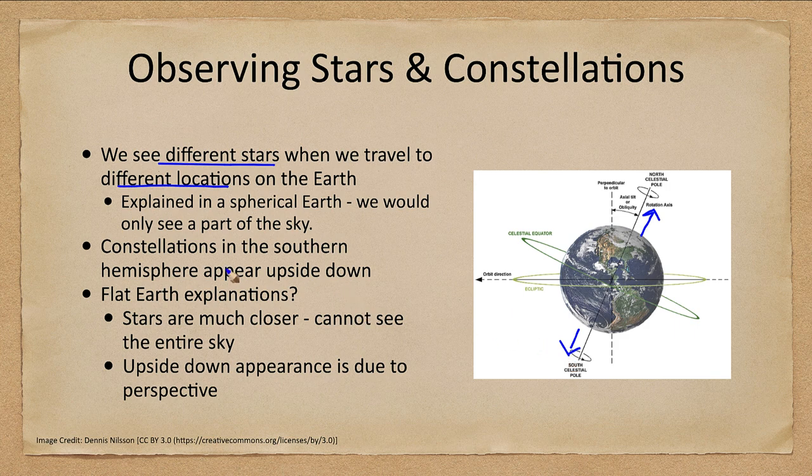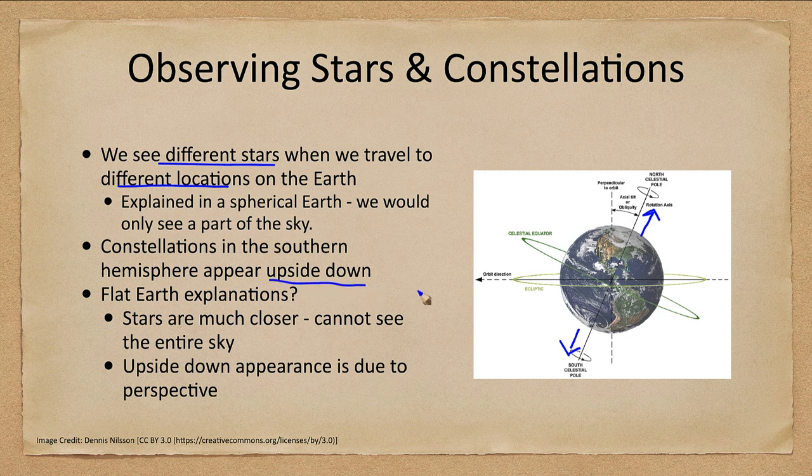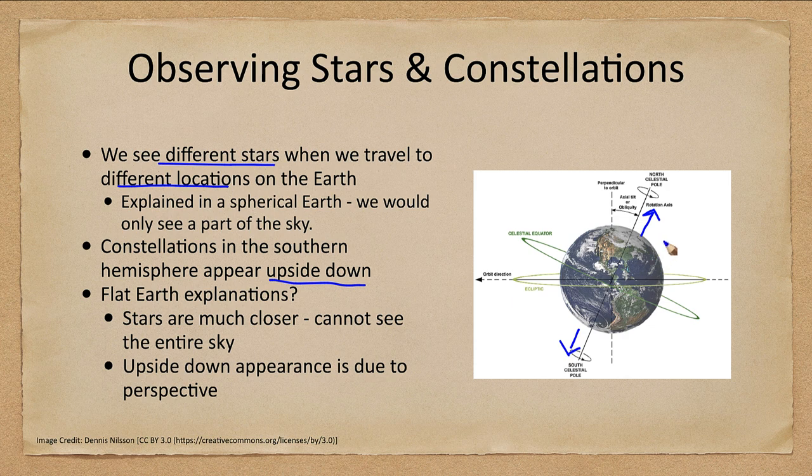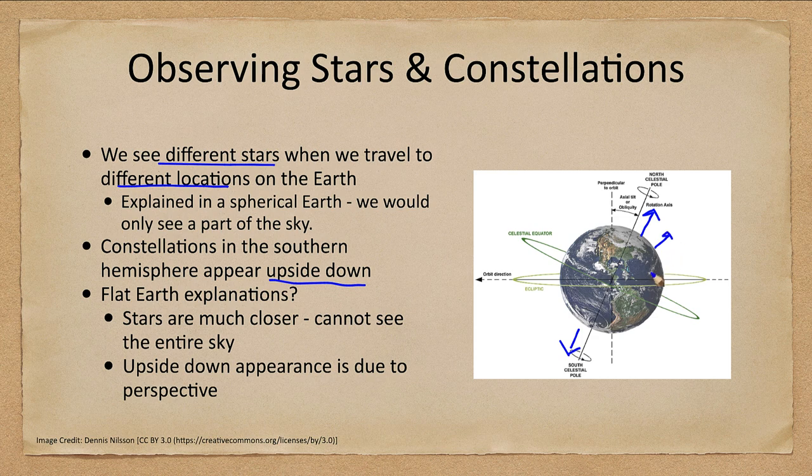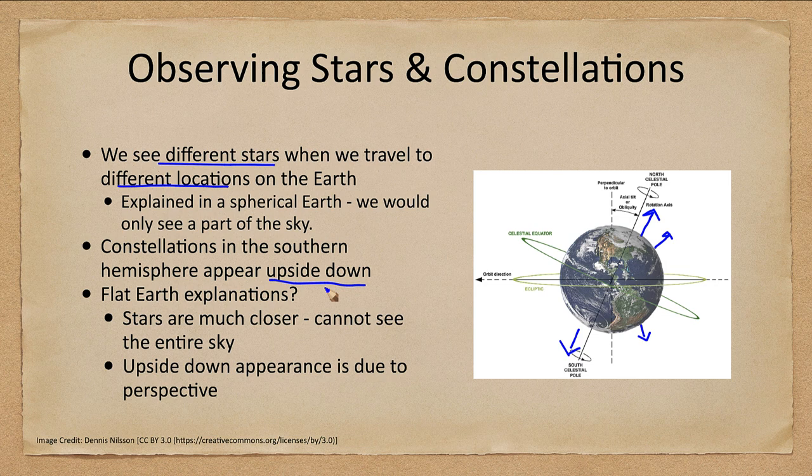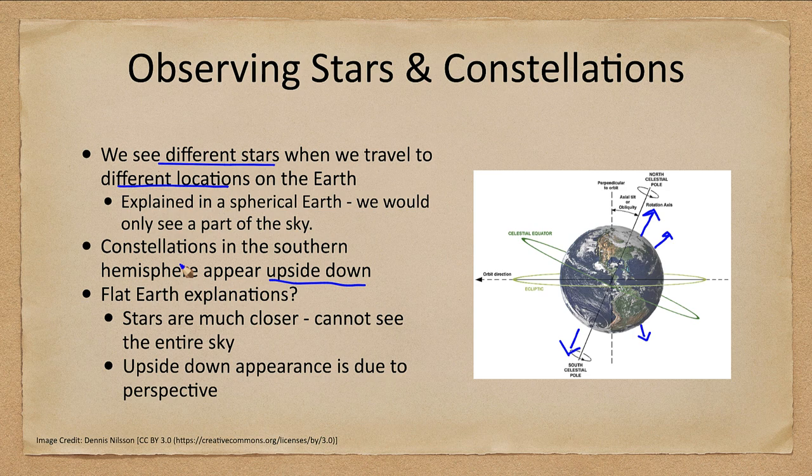We also note that constellations in the southern hemisphere appear upside down. Why? Because you're standing the opposite direction. A person standing in the northern hemisphere has their head going up one way, and in the southern hemisphere they're going the other direction, which makes it appear that the constellations are upside down. Orion is a prime example of this. If you look at Orion from the southern hemisphere and you're used to viewing it from the northern, it's going to look wrong to you.